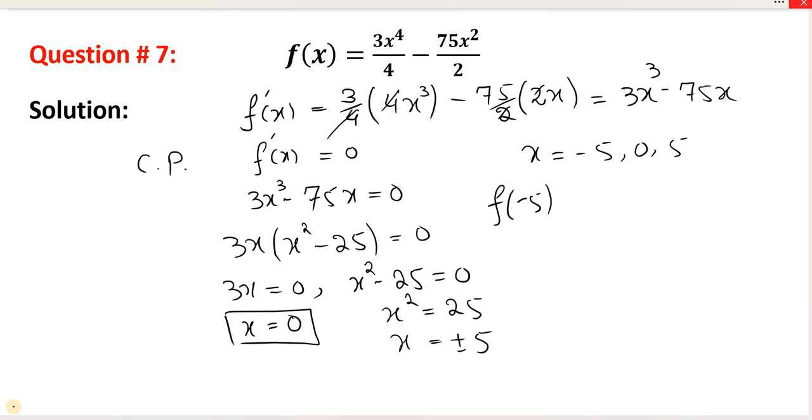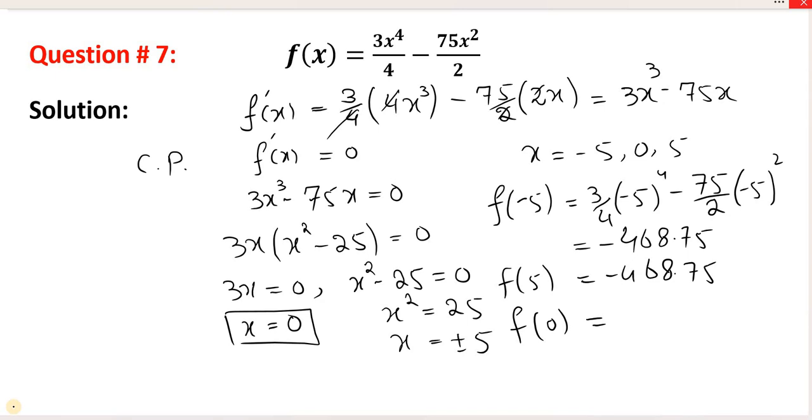We have to find the corresponding y values. So minus 5 put in the function, we put x equal to minus 5. Minus 5 to the power 4 minus 75 times minus 5 squared, and the answer will be minus 468.75. If you put 5 in the x place, then the answer will be minus 468.75.